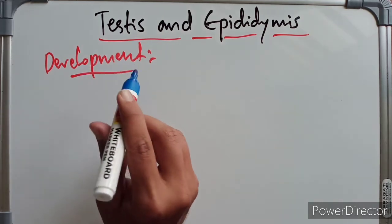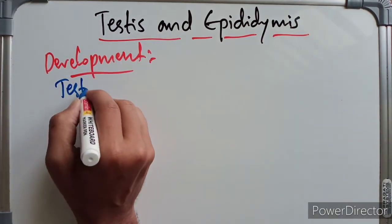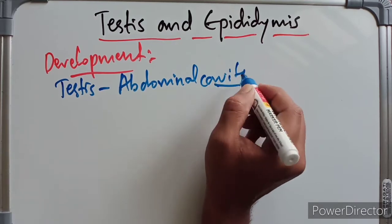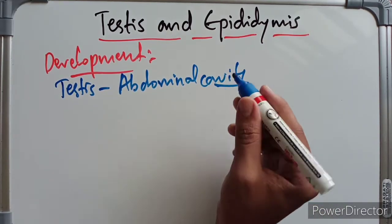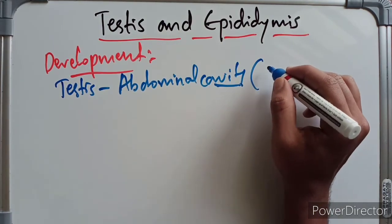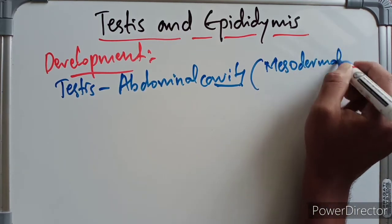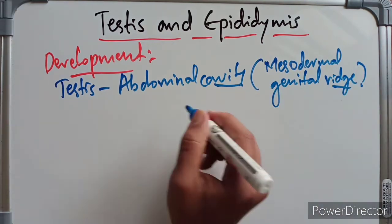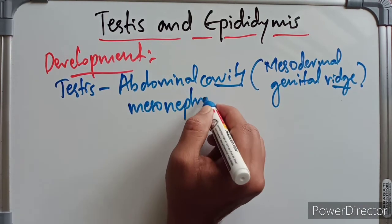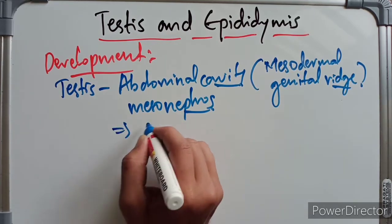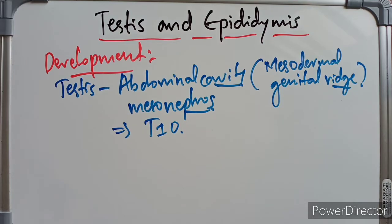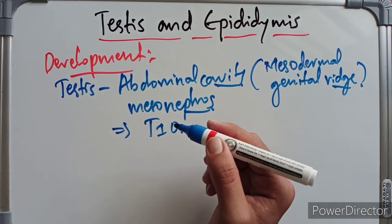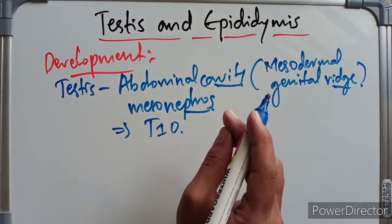The testis develops in the abdominal cavity, in its posterior wall, from the mesodermal genital ridge, on the medial side of the developing mesonephros, at the level of the T10 segment. All the components of the testis — the tunica albuginea, fibroseptae, seminiferous tubules, straight tubules, rete testis, and Sertoli cells — develop from the genital ridge.